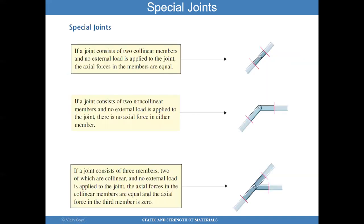We have situations called special joints. If a joint consists of two collinear members and no external load is applied, the axial forces in the members are equal — so if I have a force of 500 kN going through, the force on the other side should also be 500 kN. If a joint consists of two non-collinear members and no external loads are applied, there is no axial force in either member. If a joint consists of three members, two of which are collinear, and no external load is applied, the axial forces in the collinear members are equal and the axial force in the third member is zero. These ideas can be used to further simplify the analysis of truss systems.